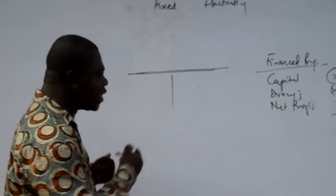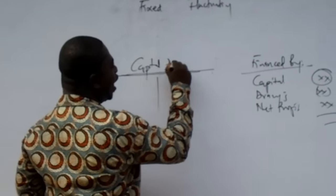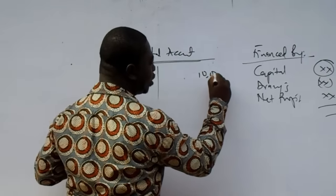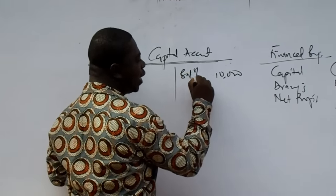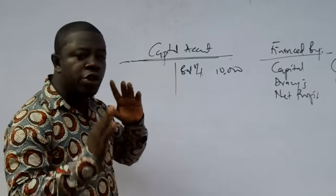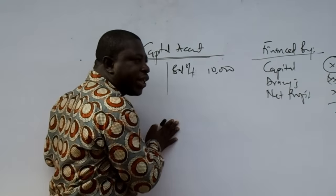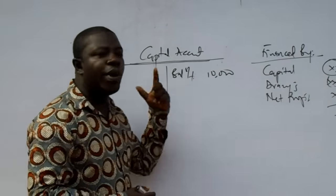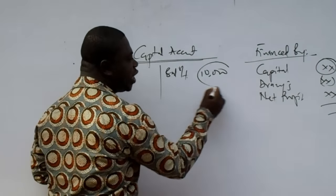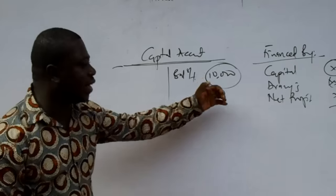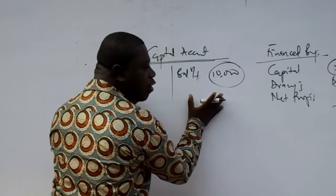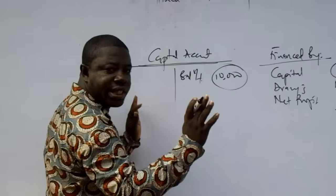When we are maintaining a fixed capital account, it means the initial capital — say 10,000 — is not supposed to change. Normally drawings would be subtracted from capital, but in a fixed capital account system, whether partners make drawings or profits are to be added, this 10,000 will not change. We will not add profits or take out drawings in this account because we want the capital account figure to remain fixed. That is why we call it a fixed capital account, and because of this, we open another account.